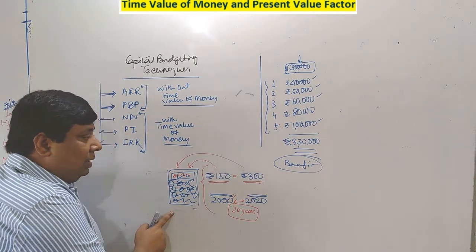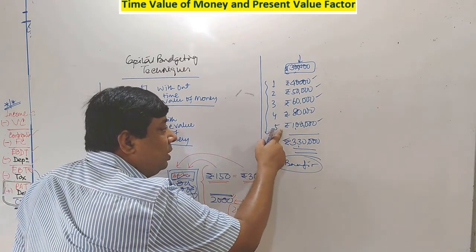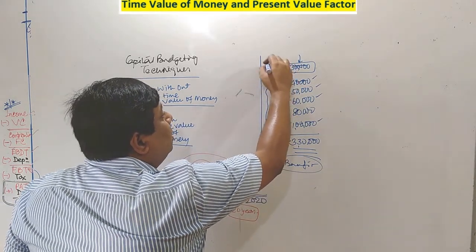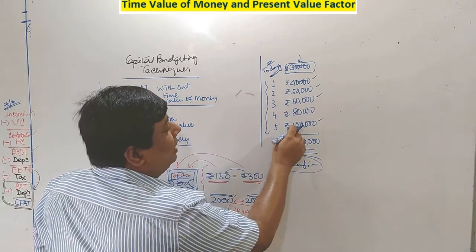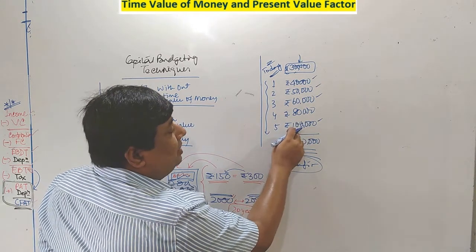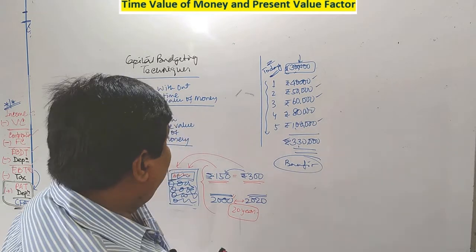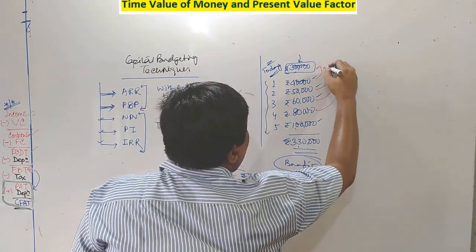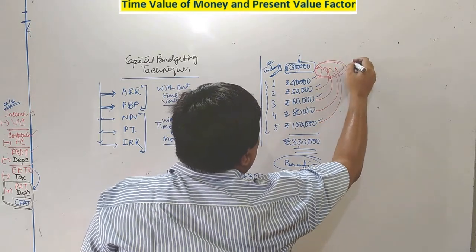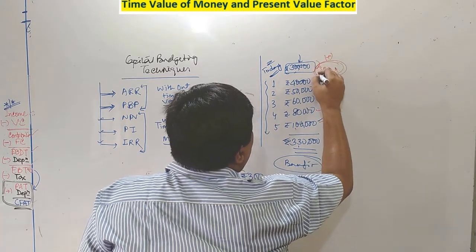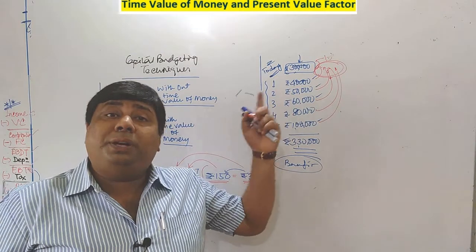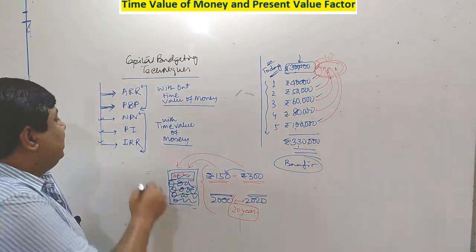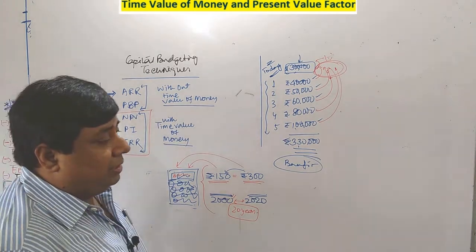Once we apply the time value of money approach, the Rs 10,000 or Rs 1 lakh you are going to receive at the end of the 5th year — is it truly worth Rs 1 lakh to us today? Probably not. According to the time value of money concept, each and every return you have to consider at today's value. After summing up all returns at today's value, you will get a different figure, and only then can you decide whether to accept the project or not. That is why these three methods are known as scientific methods under the capital budgeting approach.